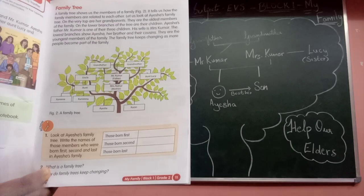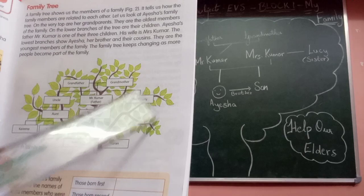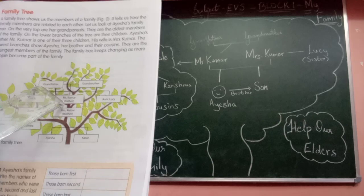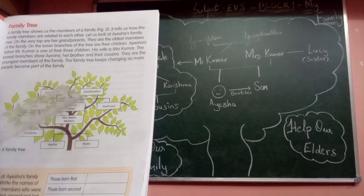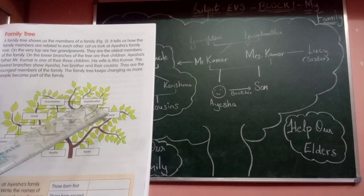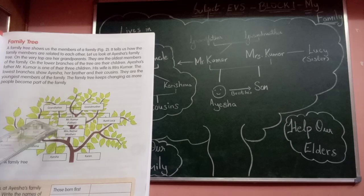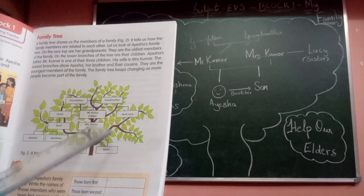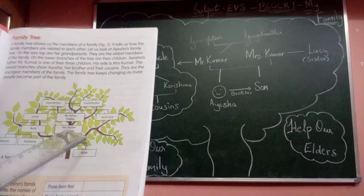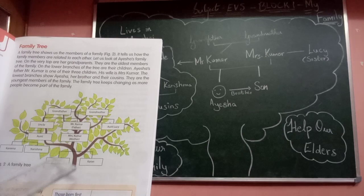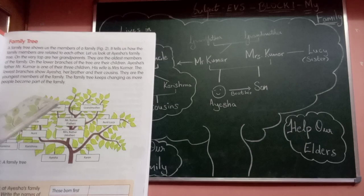Now look at Aisha's family tree. A family tree shows all the members of the family. The elderly people — grandparents — who were born first are at the top. Then come their sons, Mr. Kumar and the uncle, along with their wives. At the bottom are Aisha, Karan, Kareena, and Karishma — the children who were born last.